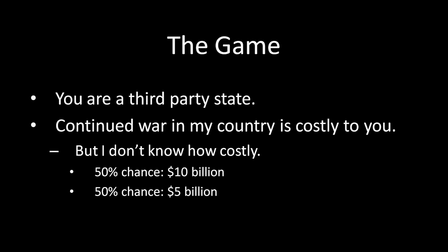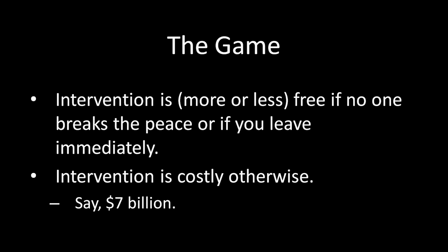You value peace either at $10 billion or $5 billion, and there's a 50% chance of each. That's something you know, but that I don't know. Intervention is going to be more or less free if no one breaks the peace, or if you leave immediately at the sight of first blood. But it is actually costly for you to get involved in a shooting war. If I challenge the terms of the settlement and you decide to shoot back, that intervention is going to cost you $7 billion. That means the type that values peace at $10 billion would be willing to pay that cost — $10 billion minus $7 billion is still a $3 billion profit — whereas the unresolved type that only values peace at $5 billion would rather run away than stay and pay those costs of fighting.